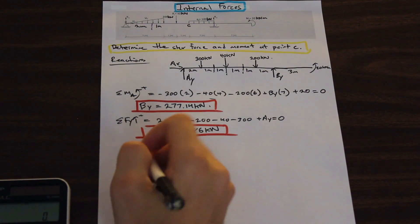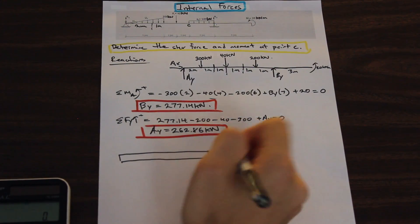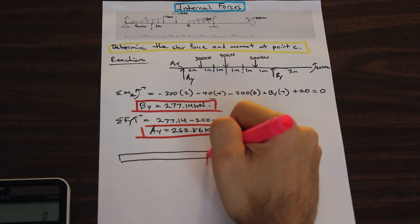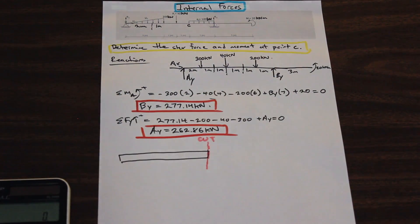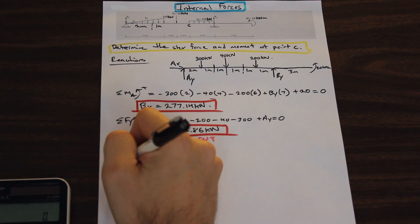So we'll cut it from the left. So that's the beam. I'm just going to draw it in pink where we cut it. So we cut it here. We cut it at point C here. This is point C. This is point A.